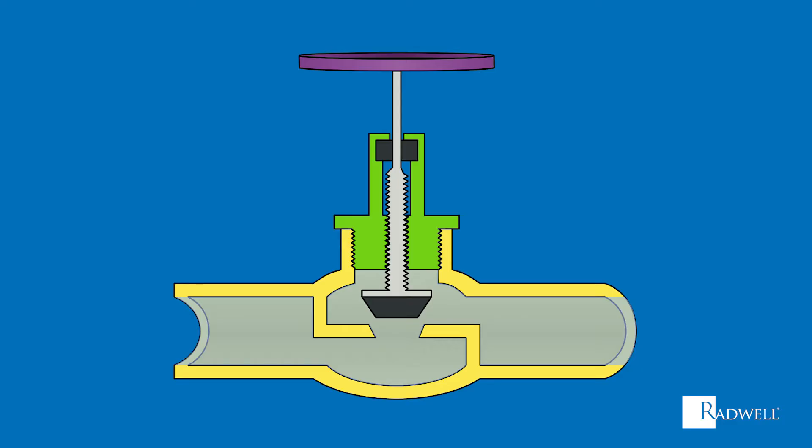A globe valve is made up of six main components starting with the body. The body is the main structure of the valve and will contain all the valve's internal parts. Next is the bonnet, which provides a leak-proof closure of the valve body.